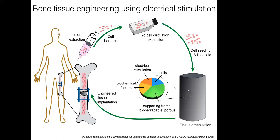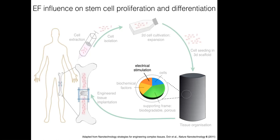The external stimuli I'm going to talk about will be electrical stimulation to promote differentiation of these MSCs into bone cells. After the cells have formed a tissue, this scaffold consisting of cells that form the bone tissue is placed back into the bone defect. There the scaffold will slowly degrade and the bone defect will be healed.